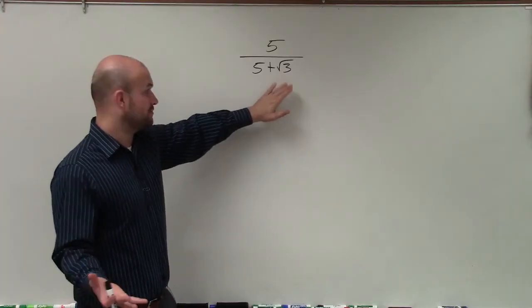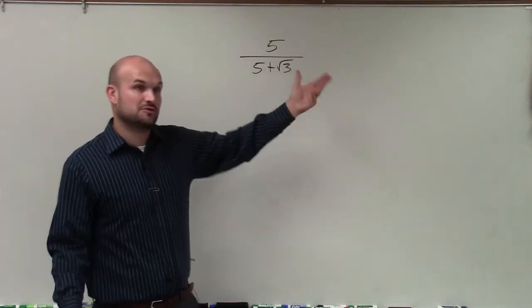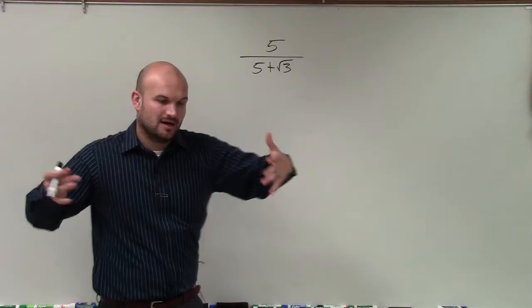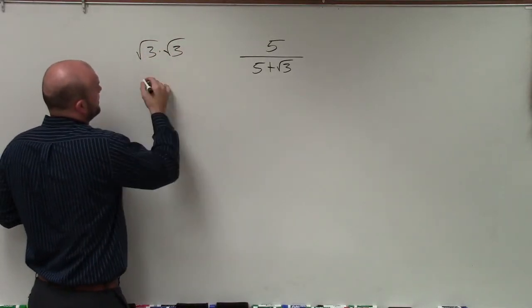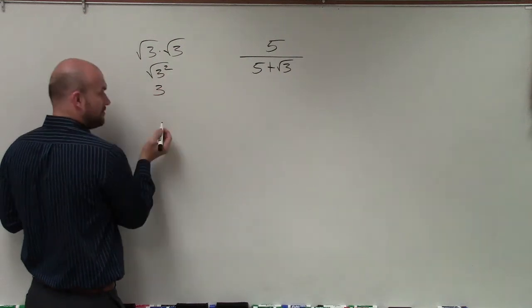So to do that, I need to multiply by √3 times √3 to get rid of the square root. Because √3 times √3 equals √3 squared, which is just equal to 3.